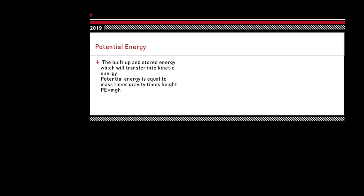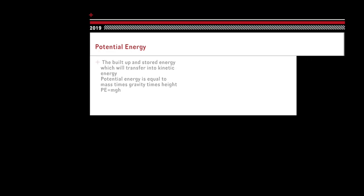The equation for potential energy is PE equals mgh. This means potential energy is equal to mass times gravity times height. Because the mass and the gravity of an object can't change, potential energy is built up or decreased depending on the height of an object.